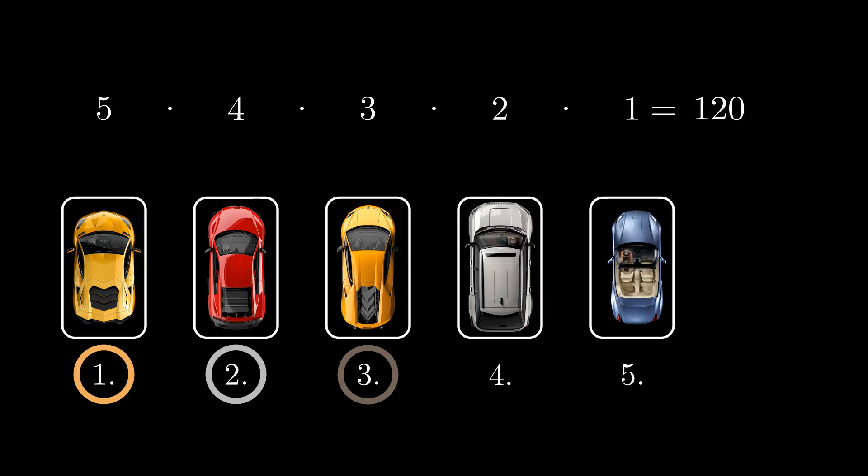Another way to say it is 5 factorial. Factorial means multiplying the number by all the whole numbers between it and one. The symbol for factorial is an exclamation mark. This can generally be written as n times n minus 1 multiplied all the way down to 1, which equals n factorial.